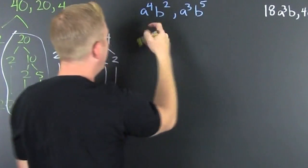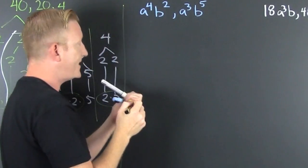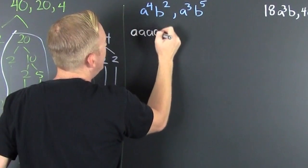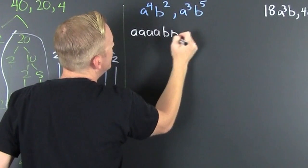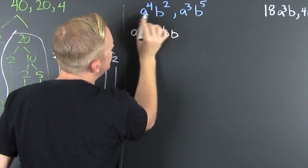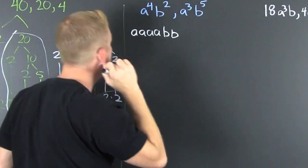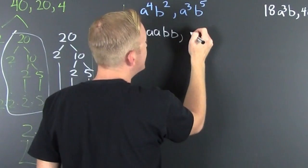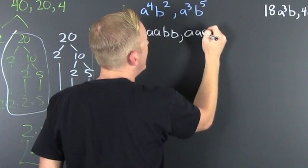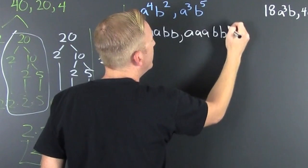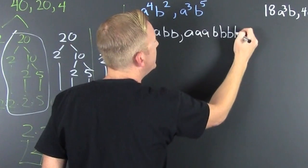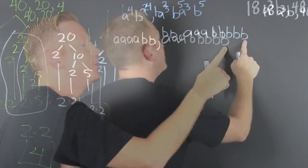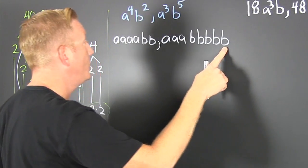Now let's break down the variable example. We have a⁴b² — that's a, a, a, a, b, b. And then we have a³b⁵ — that's a, a, a, b, b, b, b, b. So that's three a's and five b's.